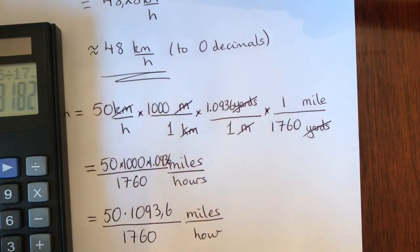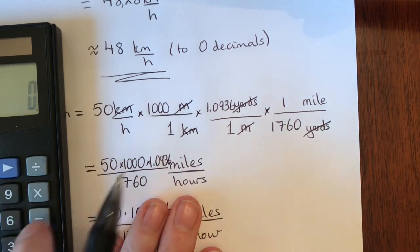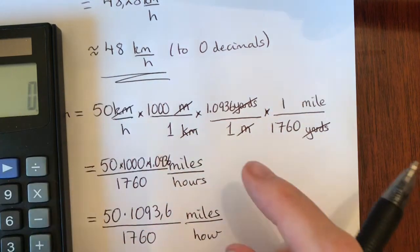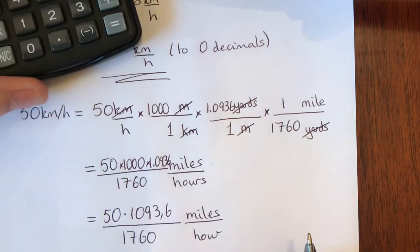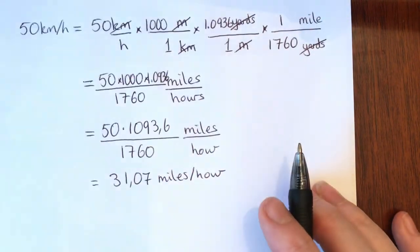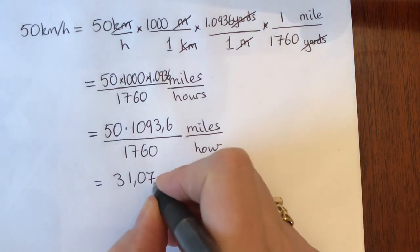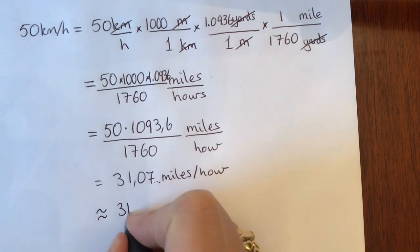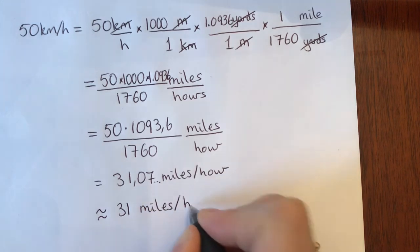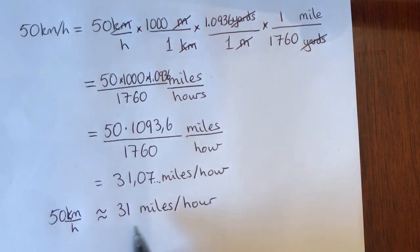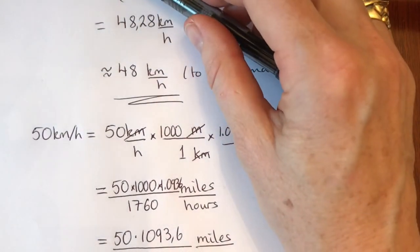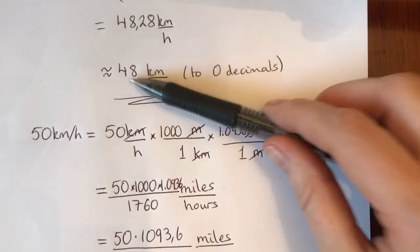Let's verify that. Using 50 times 1000 times 1.0936 divided by 1760 gives 31.068 — the same answer. So we've checked the calculation twice. It's 31.07, which is approximately 31 miles per hour. So 50 kilometers per hour is the same as 31 miles per hour, which is in line with our earlier finding that 30 miles per hour was a little less than 50 kilometers per hour.